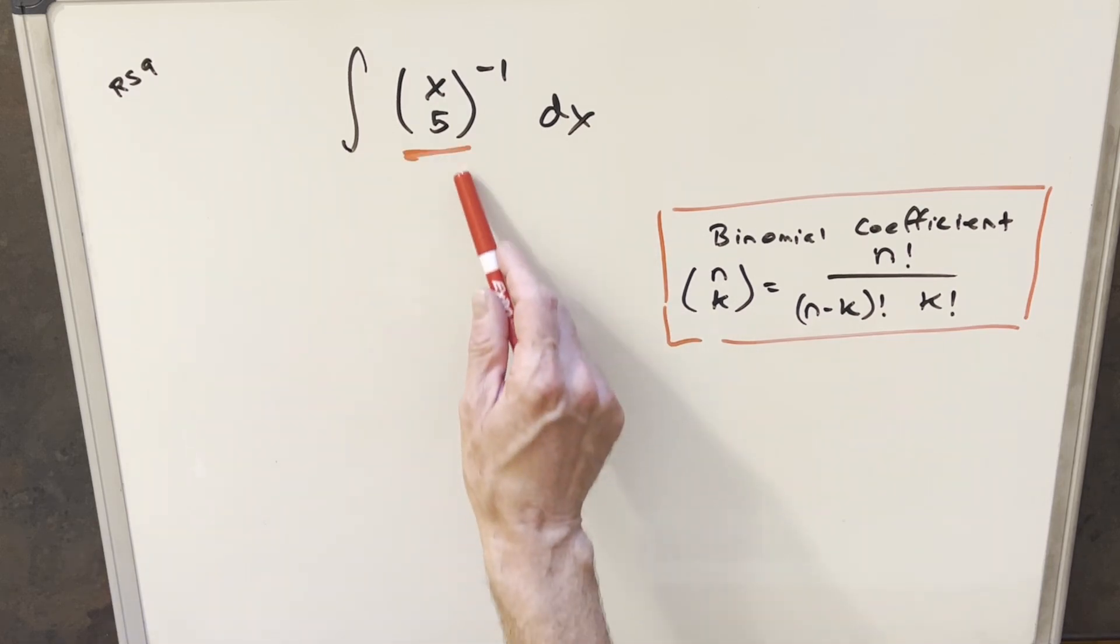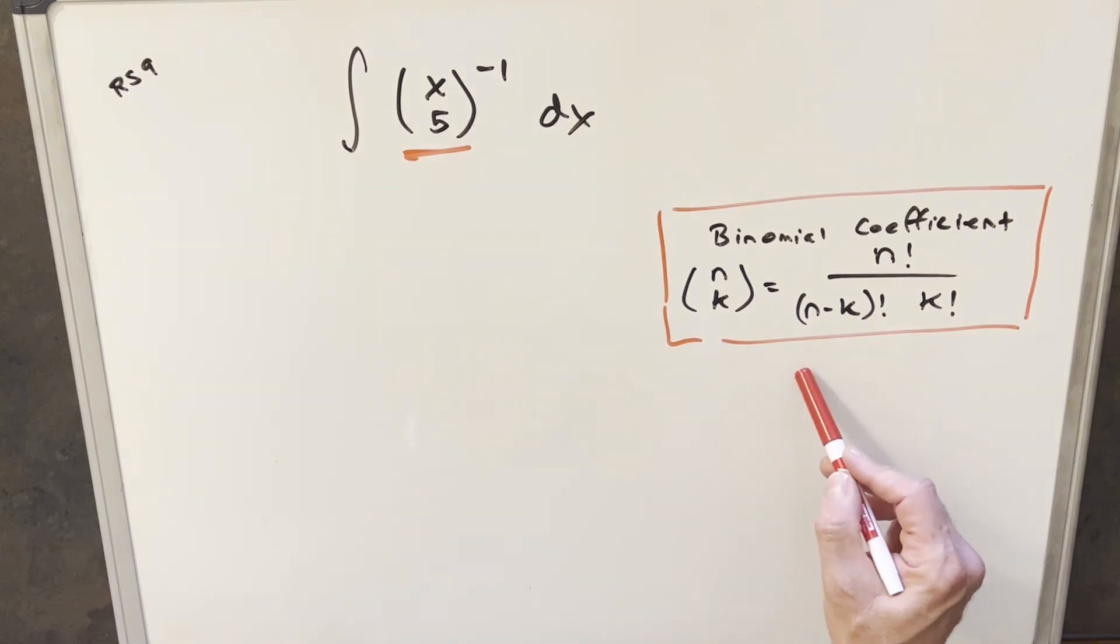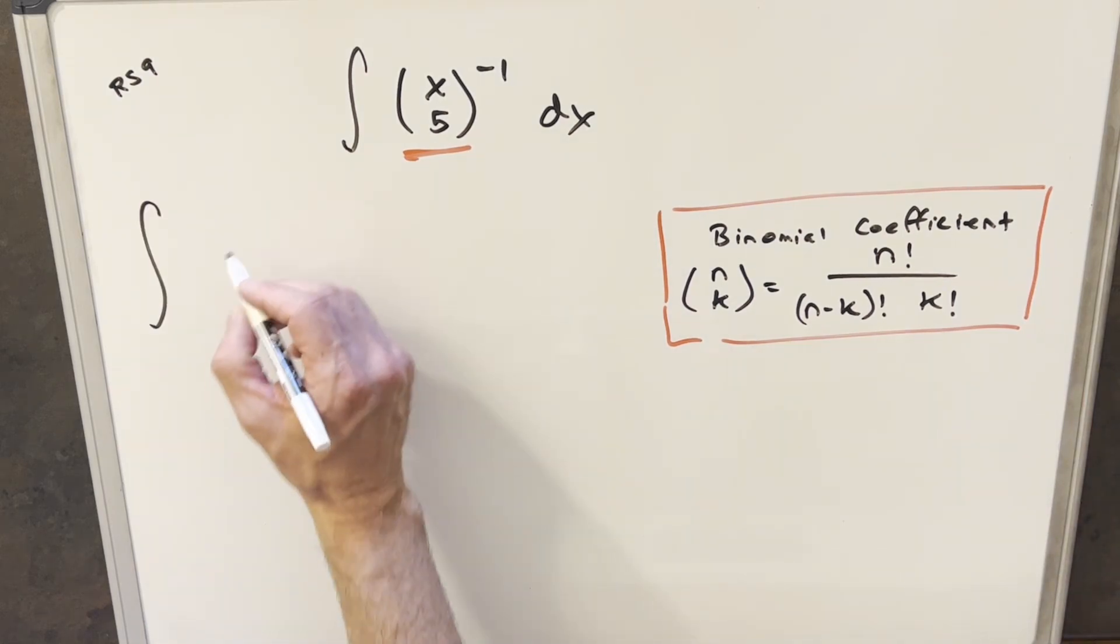And of course, my first concern is having this binomial coefficient in an integral. We're not really used to dealing with this, but we do have this definition over here to the right for the binomial coefficient. It just tells us that n choose k can be written in terms of factorials like we have here.